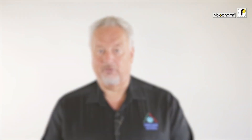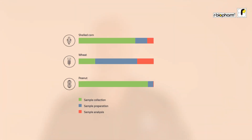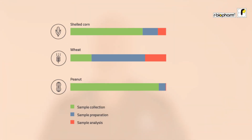The contribution of the sample preparation step may exceed the effect of the analytical method itself, as this graphic shows. The graphic shows three different commodities analyzed for mycotoxins: corn, wheat, and peanuts, with the contribution of sampling shown in green, sample preparation in blue, and the analytical method in red.